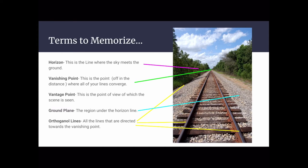I mentioned there's a bunch of diagonal lines, but those all have words. Let's start with that horizon line. The horizon line is a line where the sky meets the ground or water or whatever it is. Your vanishing point is the point that's off into the distance where all of your lines converge. So that's where all of those diagonal lines or whatever they are, they all meet to that vanishing point. Now that's different from the vantage point. We are viewing this scene, this setting, this space from a certain point where I'm standing, and that's the vantage point, the point where I'm seeing this. The ground plane is the region under the horizon line, and the orthogonal lines are all the lines that are directed towards the vanishing point. A lot of times we call these converging lines, but these are called orthogonals.